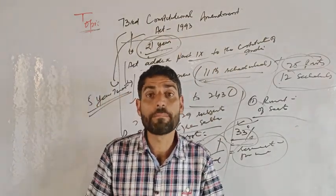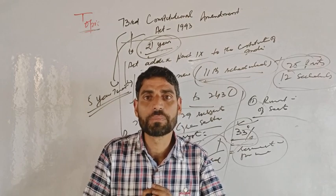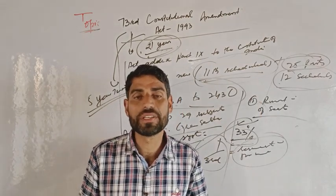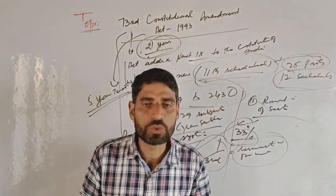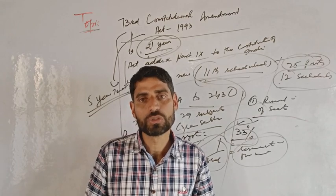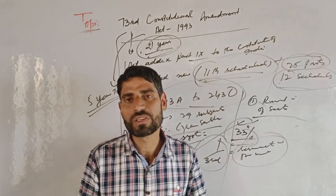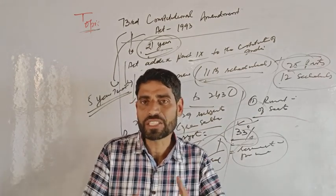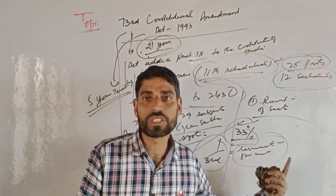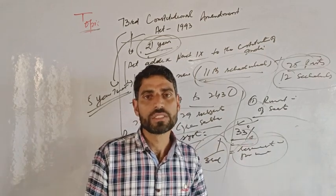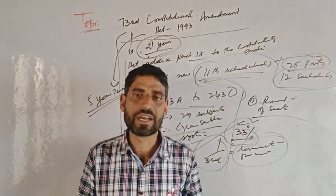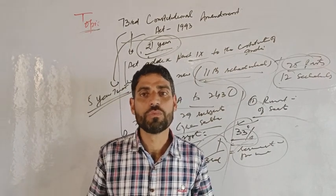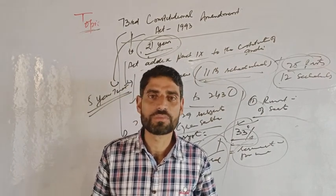The 73rd Constitutional Amendment Act gave practical shape to Gandhiji's principle and Article 40 of the Indian Constitution. This concludes the discussion on the 73rd Constitutional Amendment Act. In the next video, the 74th Constitutional Amendment Act will be discussed.